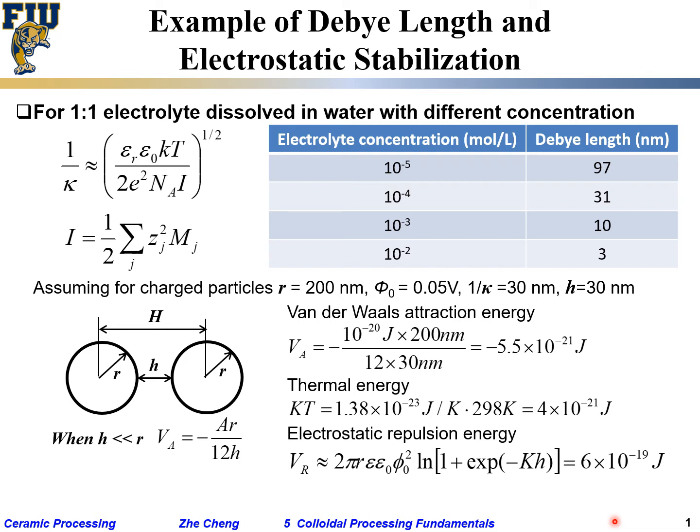Two particles with a certain distance—we can approximate the energy to be something like this. Plug the number in and we will get this. What does that mean? If our particles are this size, our separation is this far away, and the surface already got covered by certain charge that gives a surface potential energy of this value.